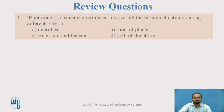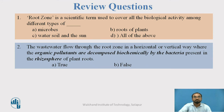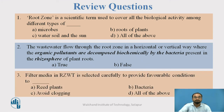Let us have a few review questions. First: Root zone is a specific term used to cover all the biological activity among different types of microbes, roots of plants, water, soil and sun, or all of the above? Second: The wastewater flows through the root zone horizontally or vertically where organic pollutants are decomposed biomechanically by bacteria — is this true or false, due to the presence of rhizosphere in the plant roots? Third: The filter media in RZWT is selected carefully to provide favorable conditions to reed plants, bacteria, avoid clogging, or all of the above?